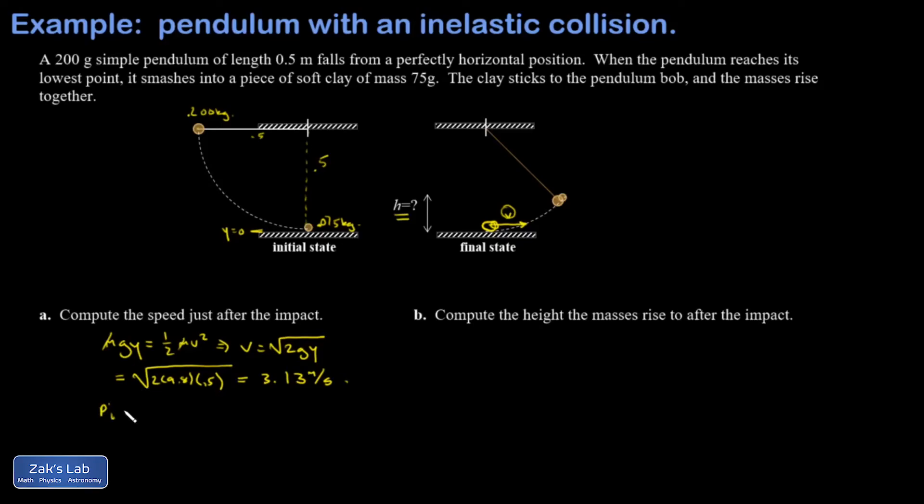So p initial equals p final. Just before the collision, I have the pendulum bob, 0.200 kilograms, moving at 3.13 meters per second. After the collision,